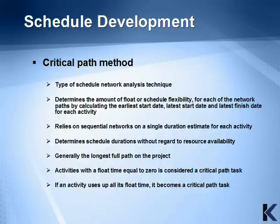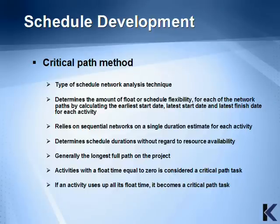The critical path method is another type of schedule network analysis technique. It determines the amount of float, or schedule flexibility, for each of the network paths by calculating the earliest start date, the latest start date, and the latest finish date for each activity. It relies on sequential networks and a single duration estimate for each activity, and it determines schedule durations without regard to resource availability. The critical path is generally the longest full path on the project, and activities with a float time equal to zero are typically considered a critical path task.